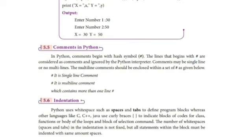In Python, program uses white space such as spaces and tabs to define program blocks, whereas C, C++, Java use curly braces. The number of white spaces in the indentation is not fixed, but all statements within the block must be indented with the same amount of spaces. Indentation should remain within the correct areas.